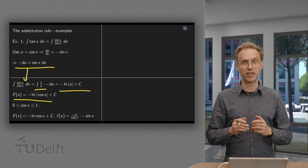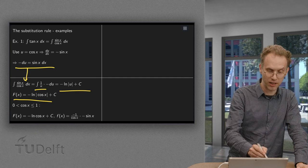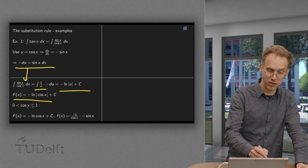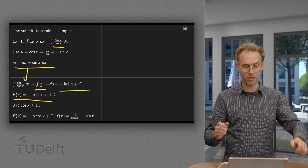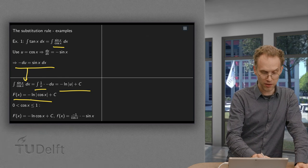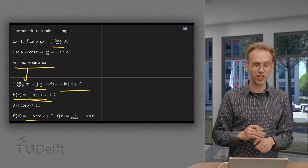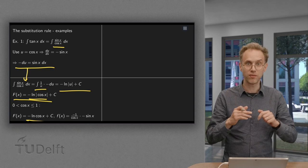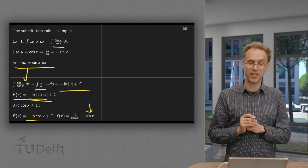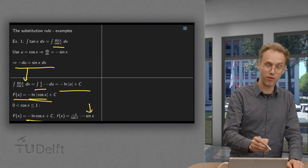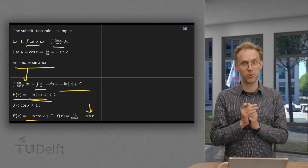So our antiderivative equals minus ln of the absolute value of cosine of x. Now let's check. We have to check either for cosine positive or cosine negative. Of course, we cannot go through cosine x equals zero, because then we would divide by zero in the integral. So let's do cosine of x positive. Then this capital F equals minus ln of cosine of x plus a constant. We differentiate. We get minus 1 over cosine of x times chain rule minus sine of x, which gives us indeed sine of x over cosine of x for our small f, which is indeed the tangent of x. So, correct.